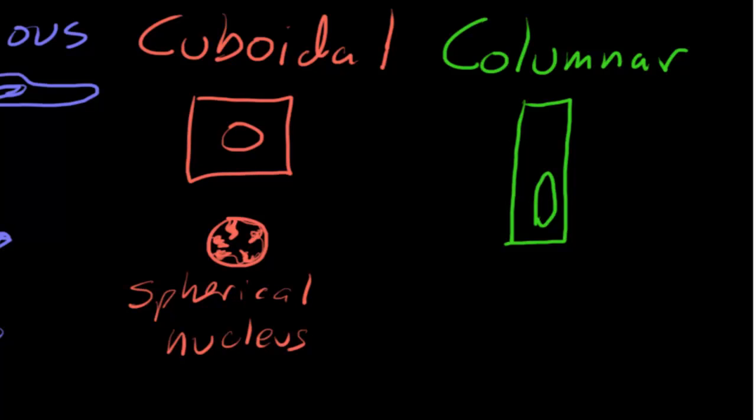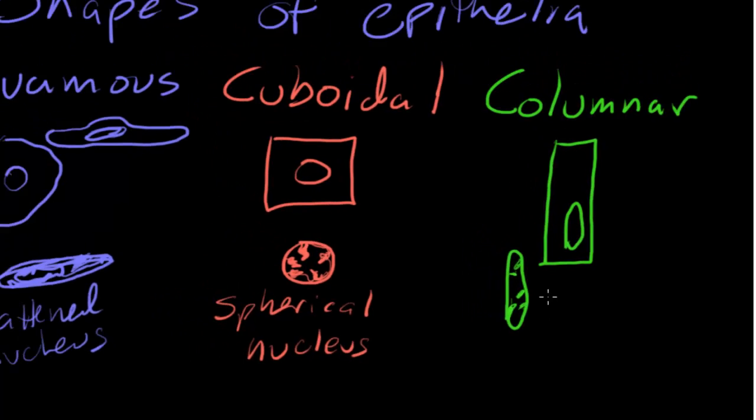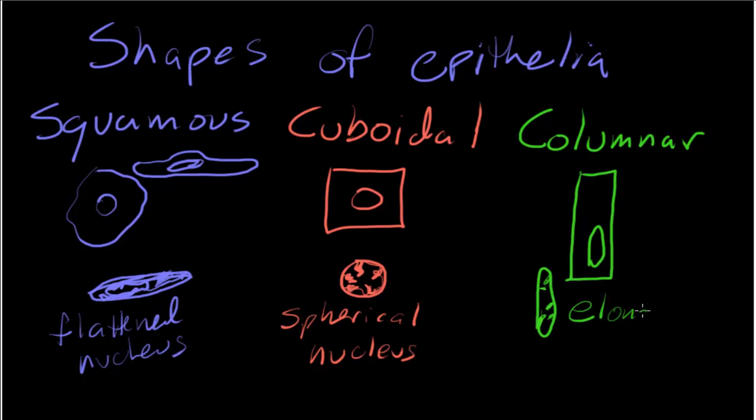And then, finally, for columnar epithelia, because the cells are compressed side to side and elongated up and down, you're going to see that the nucleus is going to be elongated. I think it looks kind of like a cigar. So, you're going to look for these elongate cigar-shaped nucleus. We'll use our fancy science word here and say an elongate nucleus.